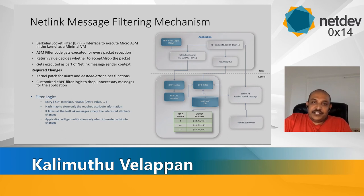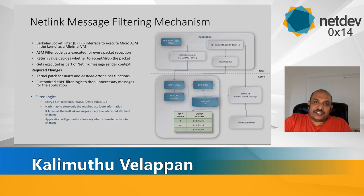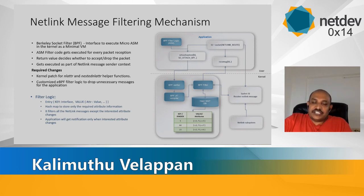BPF is a socket filter written in micro-assembly. It is executed in the kernel as a minimal VM. This microcode gets executed as part of the socket for every netlink message received for that socket. The return value decides whether the packet is dropped or accepted and sent to the application. To achieve this, two things are needed: first, a minimal kernel patch to support an attribute processing helper function in the kernel has been submitted and is under review. Second, each application needs to write a filter code and register with the netlink framework, stating which attributes it is interested in receiving netlink messages for.